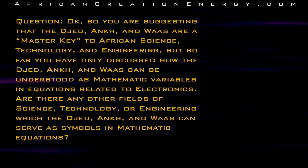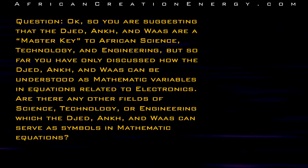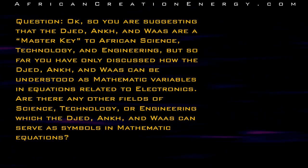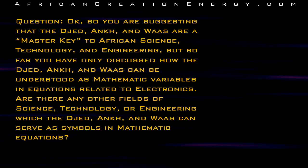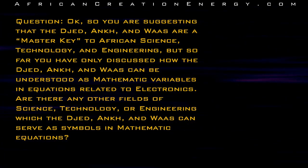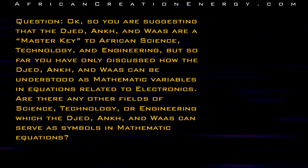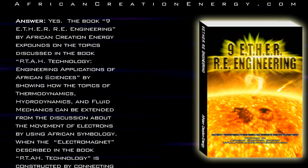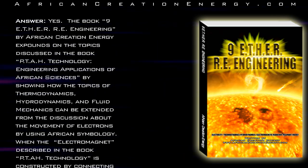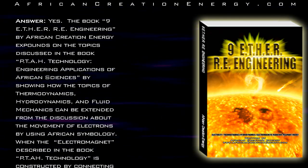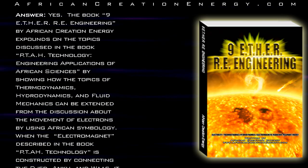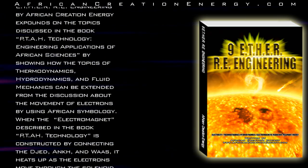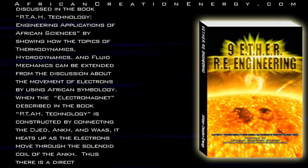Question: You are suggesting that the Jed, Ankh, and Was are a master key to African science, technology, and engineering, but so far you have only discussed how they can be understood as mathematical variables in equations related to electronics. Are there any other fields of science, technology, or engineering where the Jed, Ankh, and Was can serve as symbols in mathematical equations? Answer: Yes. The book Nine Ether Ray Engineering by African Creation Energy expounds on the topics in Ta Technology by showing how thermodynamics, hydrodynamics, and fluid mechanics can be extended from the discussion about the movement of electrons using African symbology. When the electromagnet described in Ta Technology is constructed by connecting the Jed, Ankh, and Was, it heats up as electrons move through the solenoid coil of the Ankh.